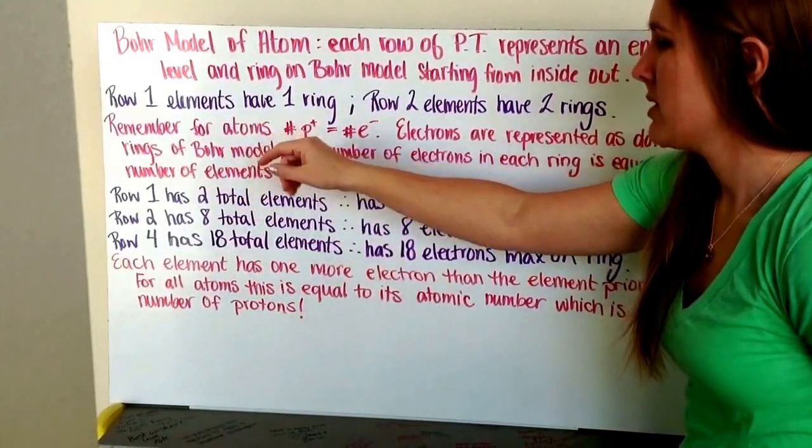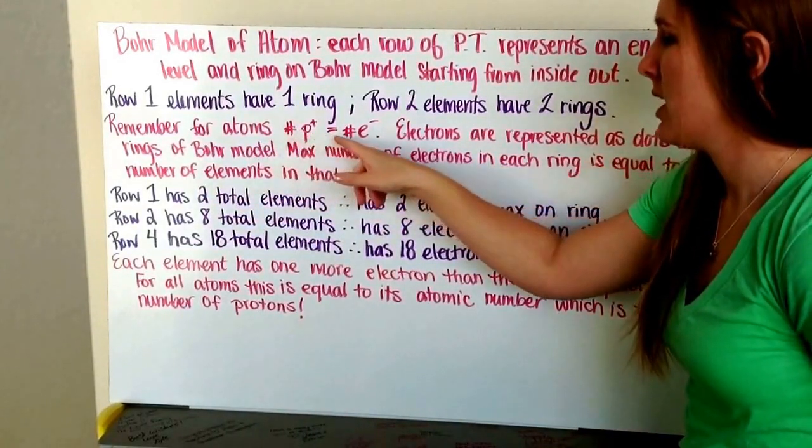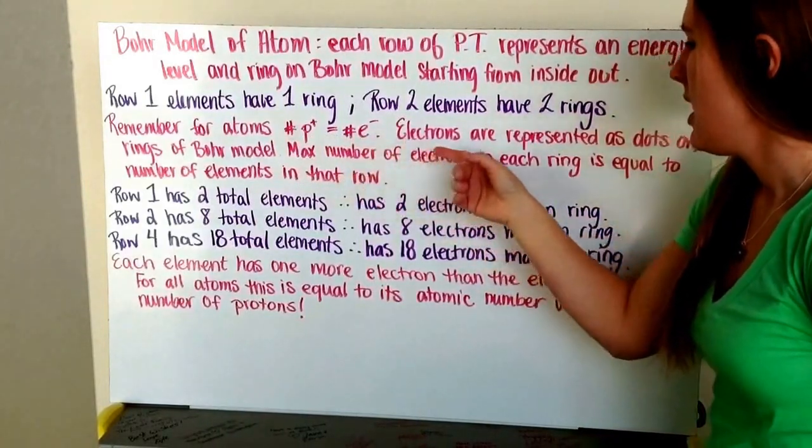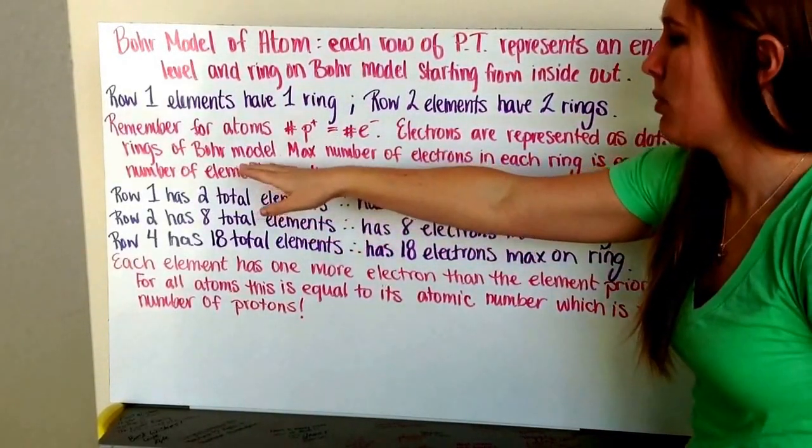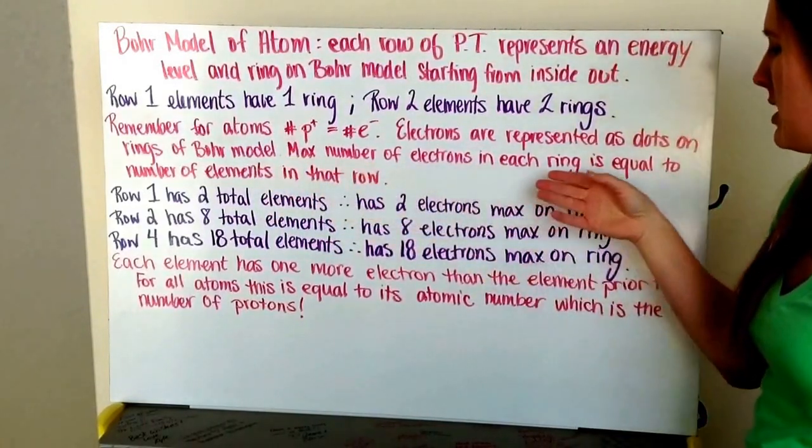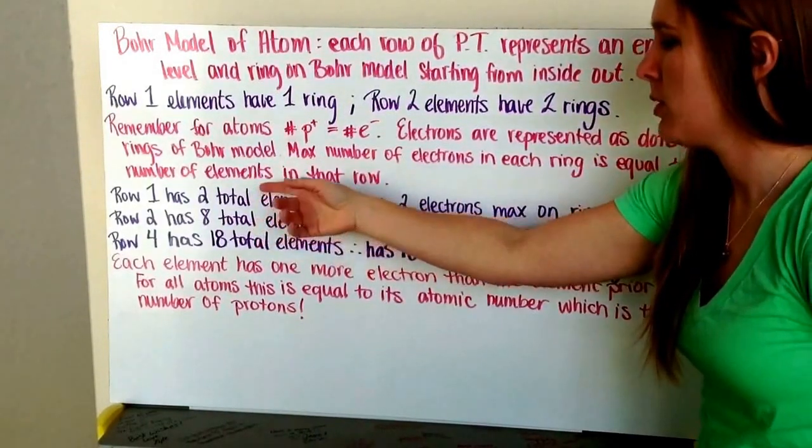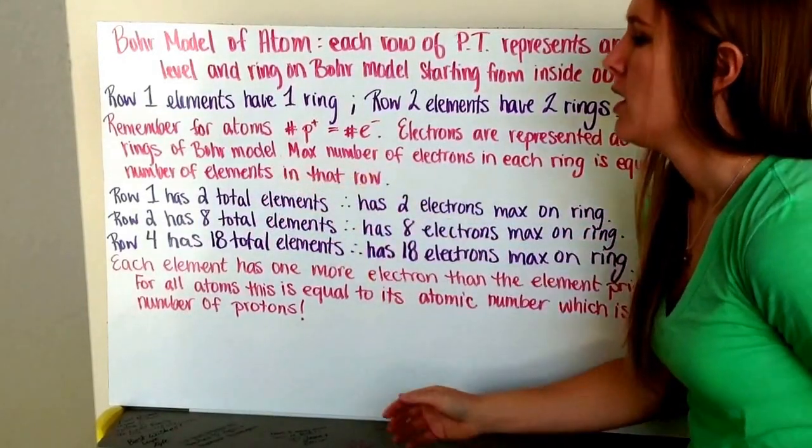Remember that for atoms, they have an equal number of protons as they do electrons, and electrons are represented as dots on the rings of the Bohr model. The maximum number of electrons in each ring is equal to the number